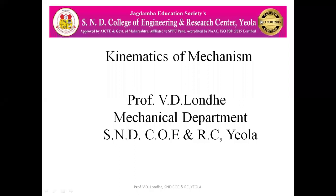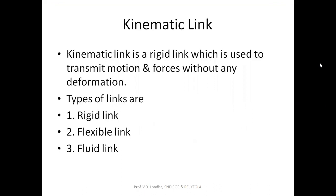Hello friends, today we are going to see the kinematics of mechanism, in which we are dealing with links, its types and its orientation. A kinematic link is a rigid body which is mainly used to transmit motion and forces without any deformation. There will be no deformation while transmitting the motion and forces. This is called a kinematic link.